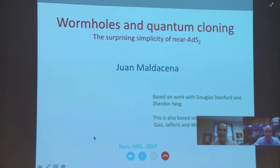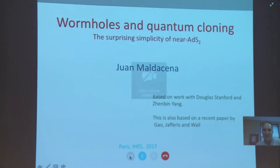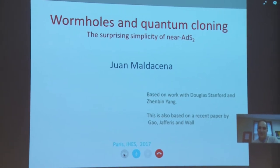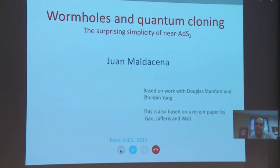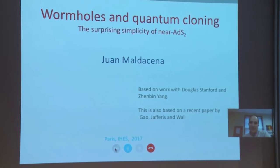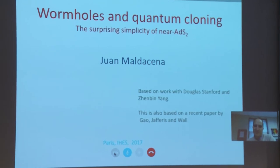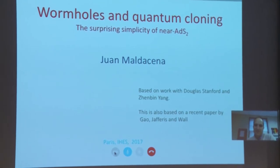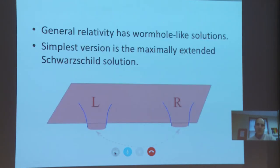I'll be talking about traversable wormholes and some applications to quantum cloning. The subtext will be the surprising simplicity of nearly AdS₂ spacetimes, or the gravitational physics of nearly AdS₂ spacetimes. This work is based on collaborations with Douglas Stanford and Shen Bing Yang, a student at Princeton University, and also on a recent paper by Gao, Jafferis, and Wall.